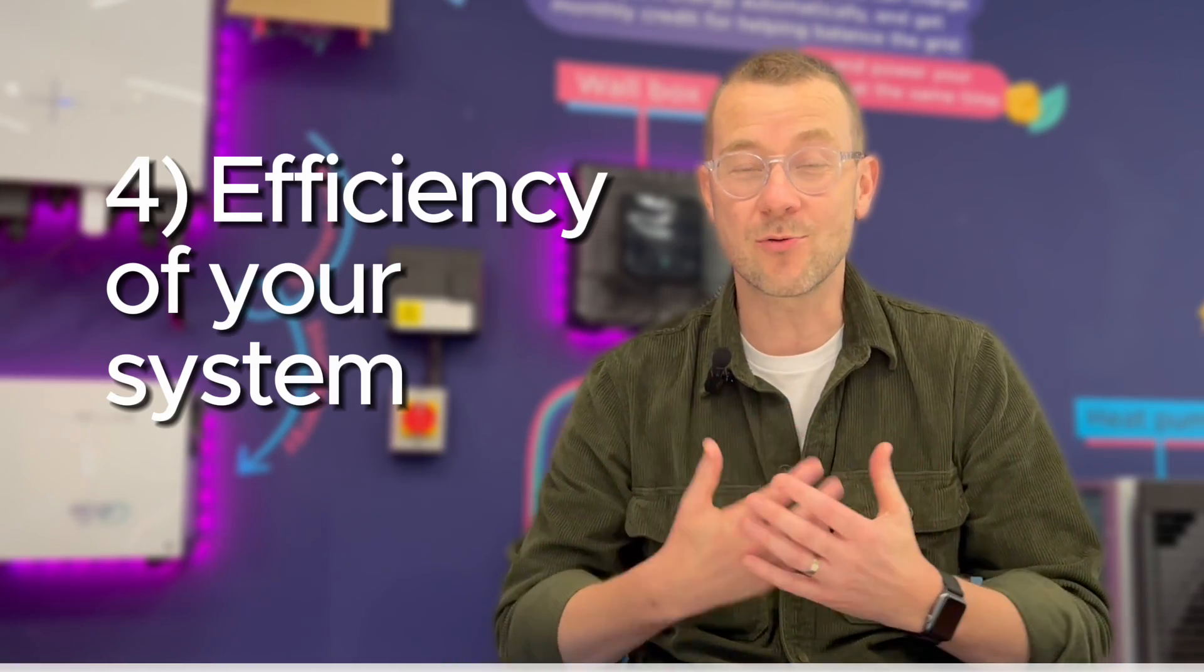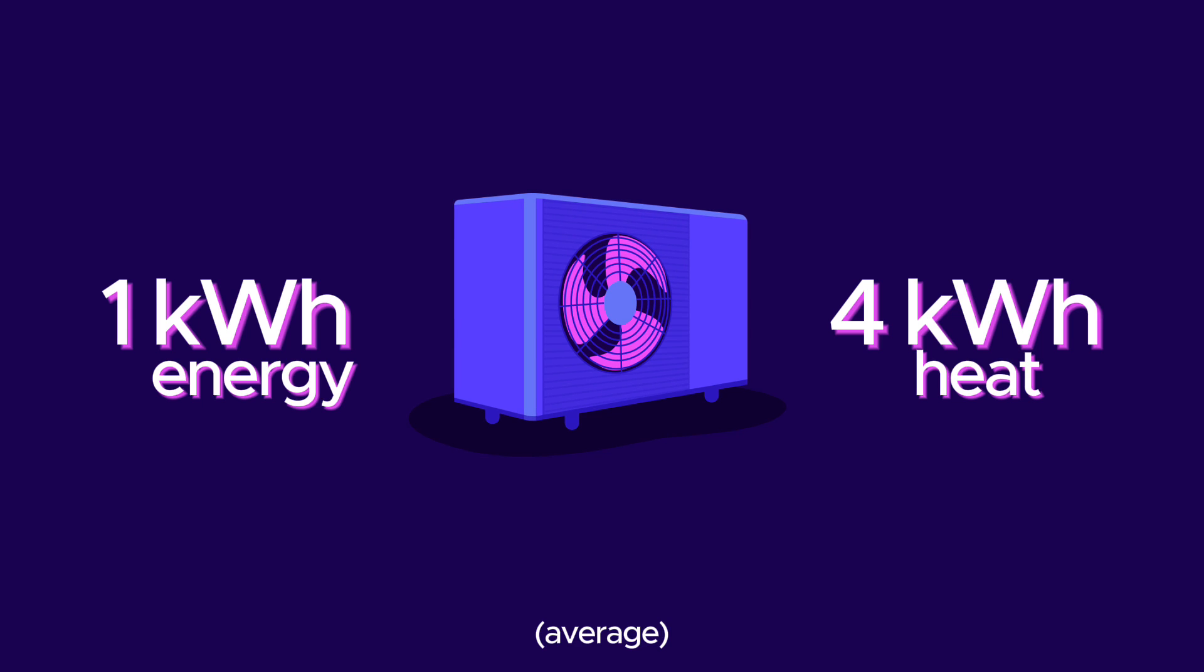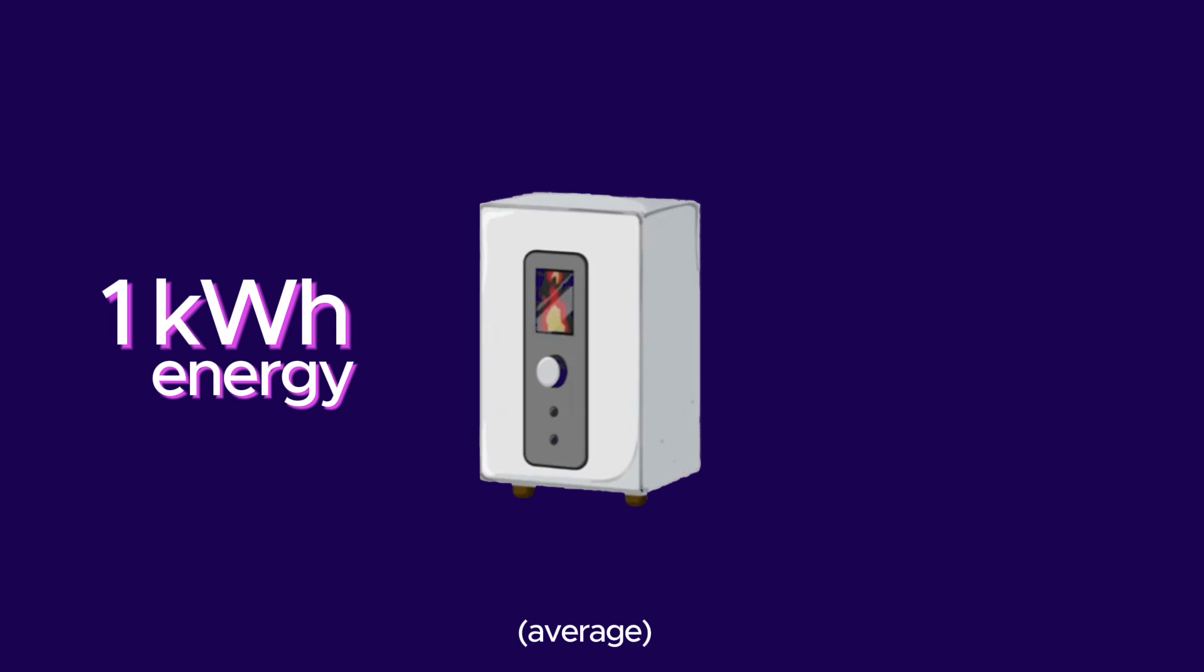The efficiency of your heating system is also really key. Heat pumps, for example, are up to four times more efficient than a gas boiler. So with a heat pump, for every one unit of energy that you put into the system, you'll achieve four units of heat. With a gas boiler by comparison, one unit of energy equals 0.9 units of heat.